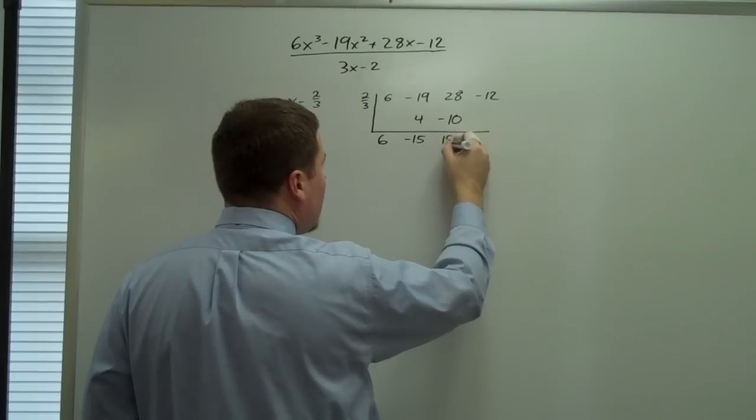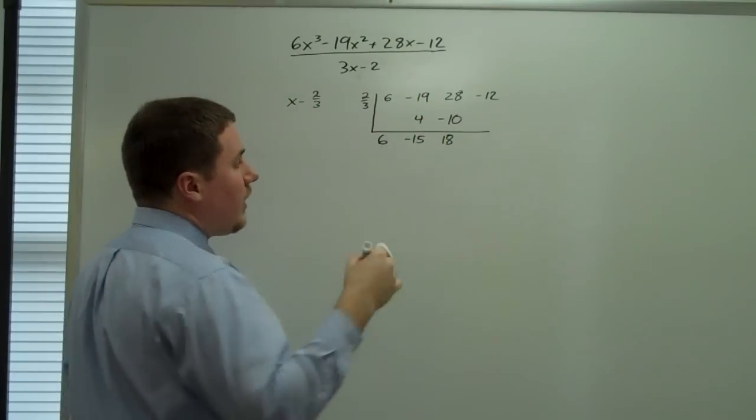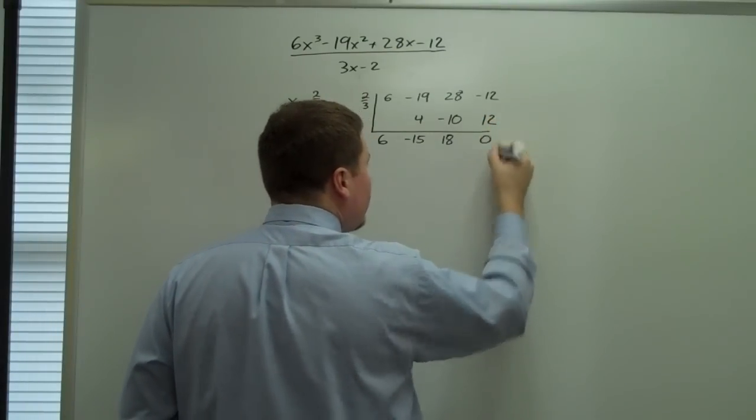28 and negative 10 would be 18. So then we take 2 thirds of that, which would be 1 third of 18 is 6. Twice that is 12.